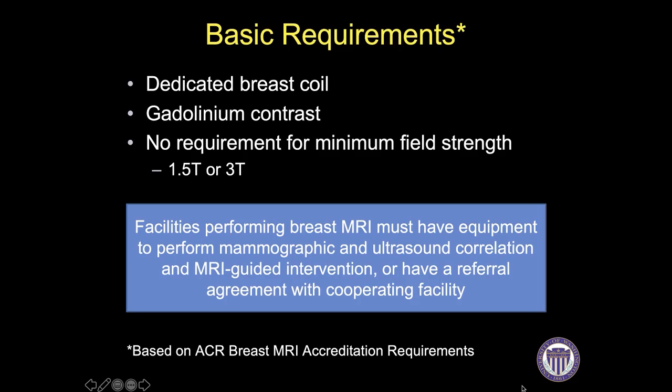Moving on, we are going to talk about basic technical requirements based on the ACR breast MRI accreditation requirements. This includes utilizing a dedicated breast coil and administration of a contrast agent — in this case gadolinium — when looking for breast cancer. Gadolinium is not required to look for silicone implant rupture, and there is no current ACR requirement for a minimum magnet field strength. However, the recommended field strength should be at least 1.5 tesla.